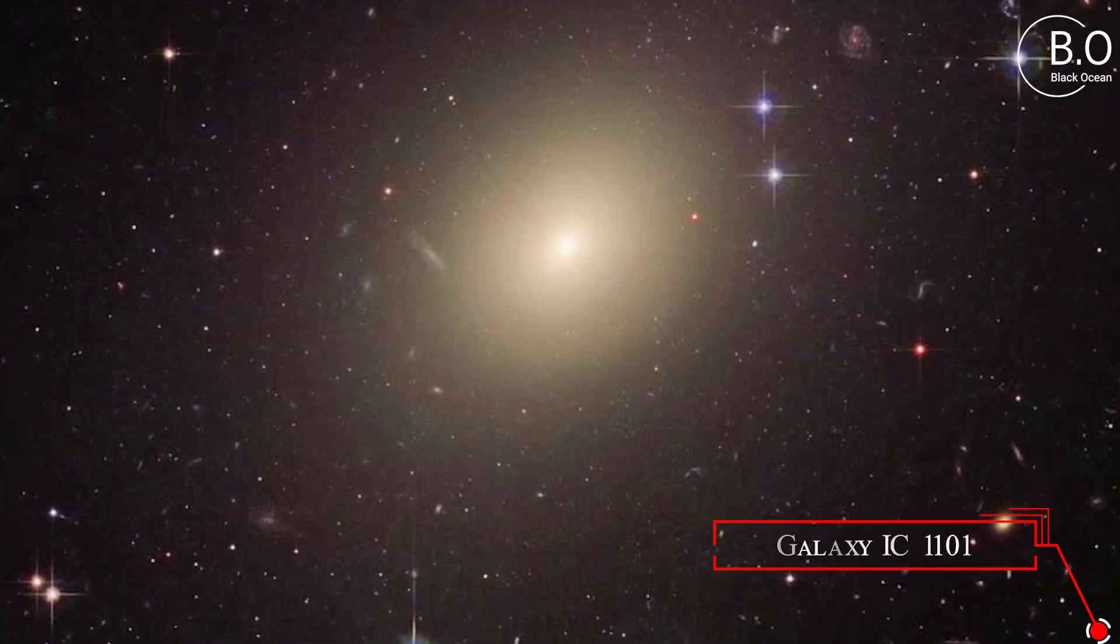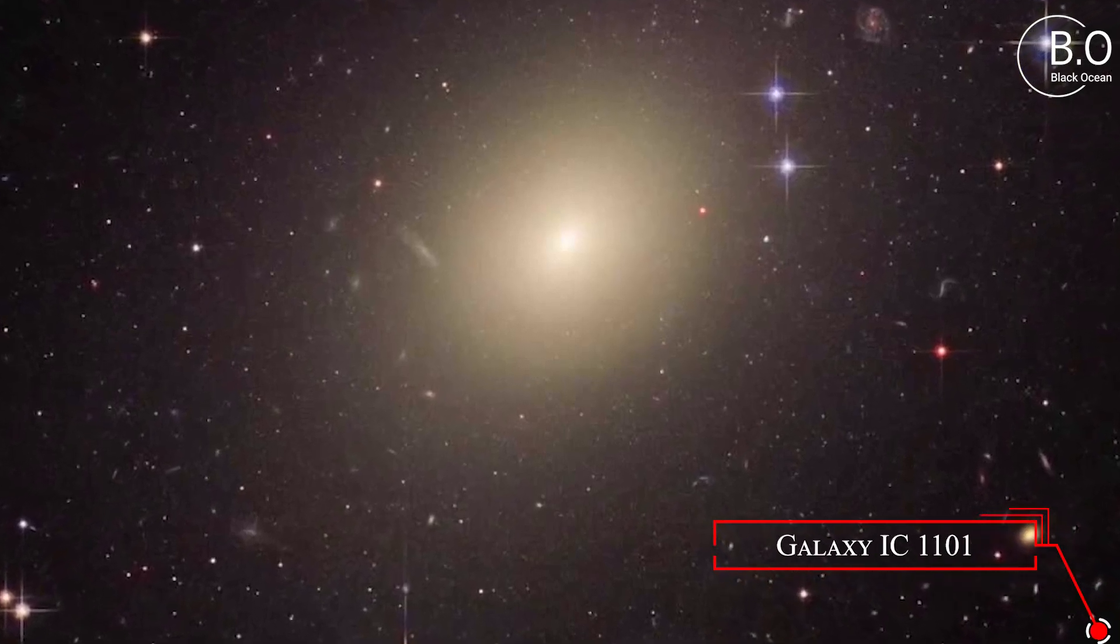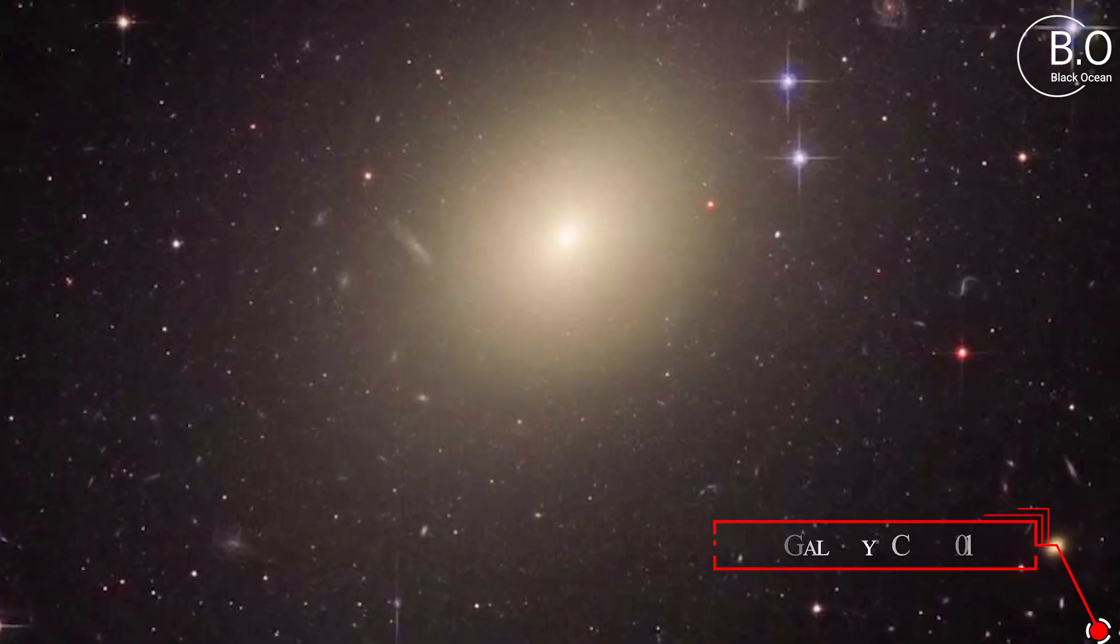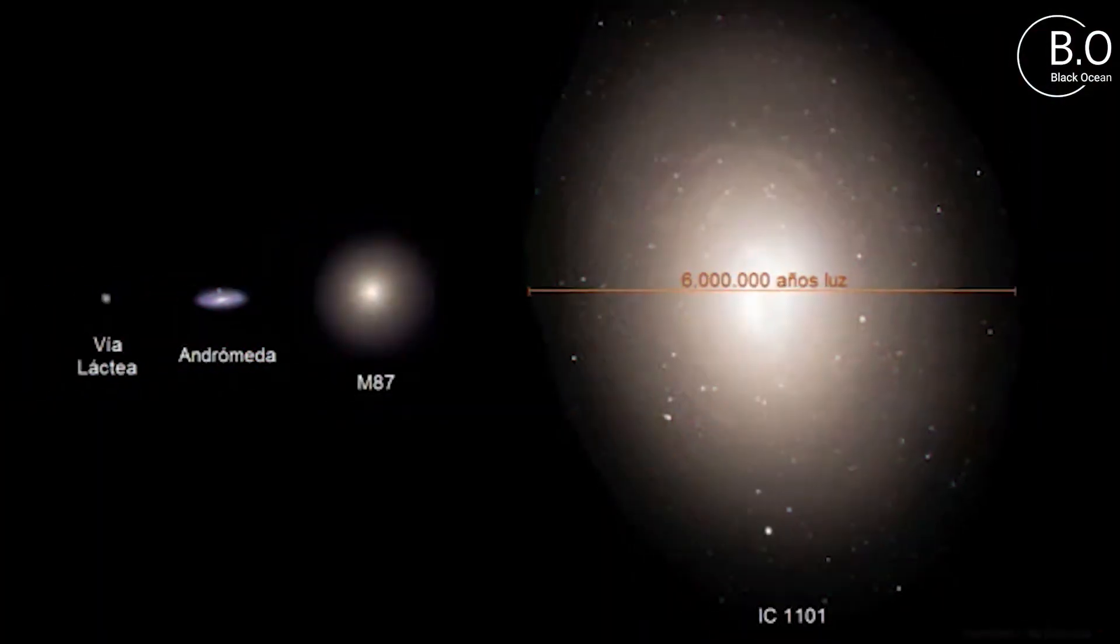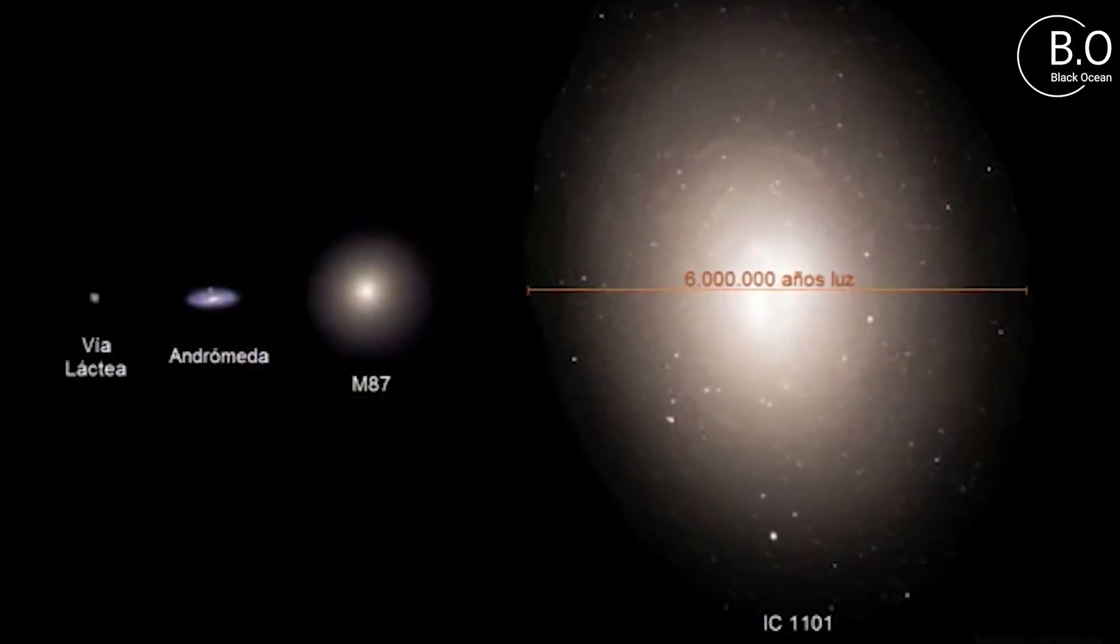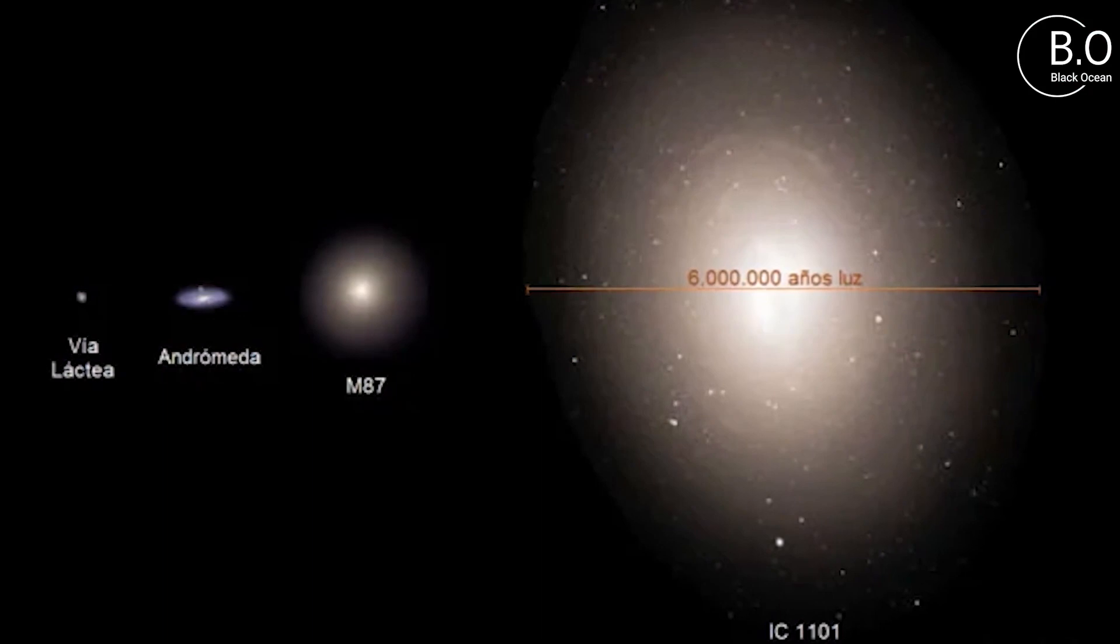The galaxy IC 1101 is 5.5 million light years across and is not only much more massive than our galaxy, but also holds the title of the largest galaxy in the universe.